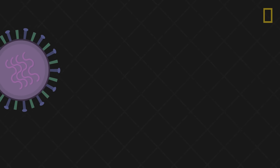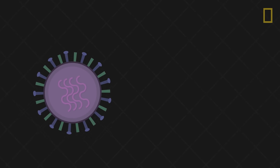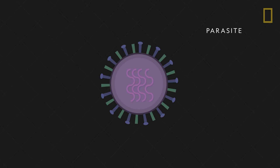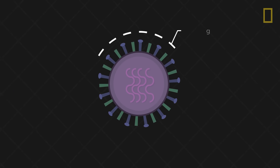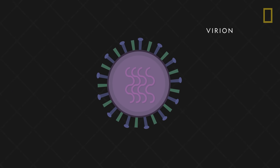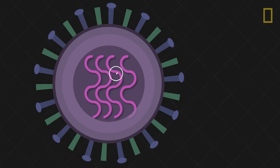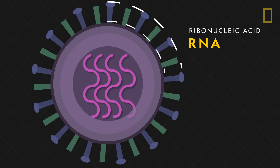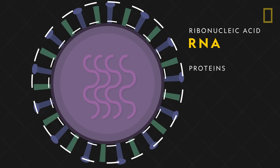Like other viruses, the flu virus is a parasite. The viral agent itself, called a virion, is made of a ribonucleic acid, or RNA, surrounded by proteins.